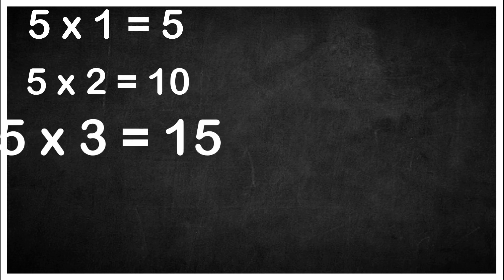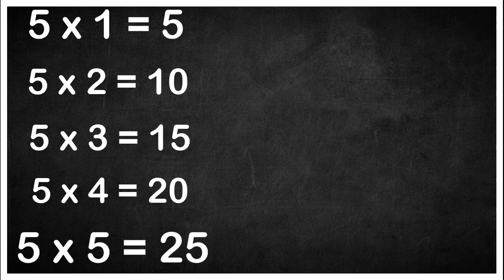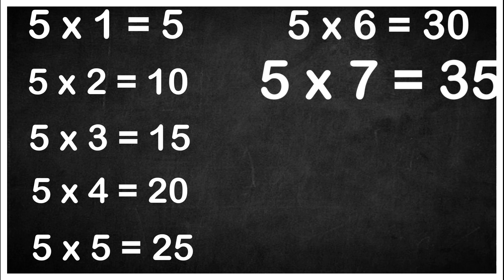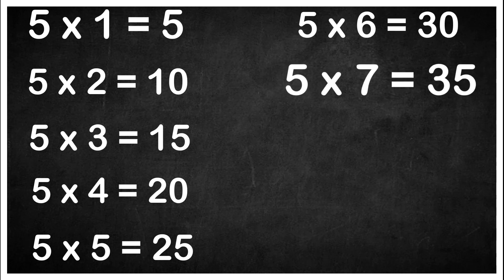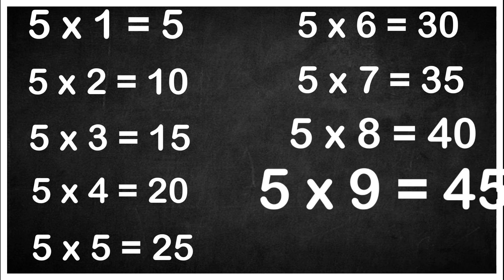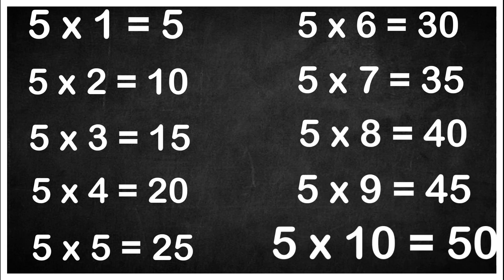Five one is five. Five twos are ten. Five threes are fifteen. Five fours are twenty. Five fives are twenty-five. Five sixes are thirty. Five sevens are thirty-five. Five eights are forty. Five nines are forty-five. Five tens are fifty.